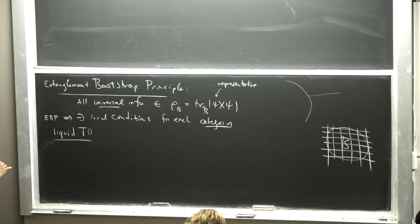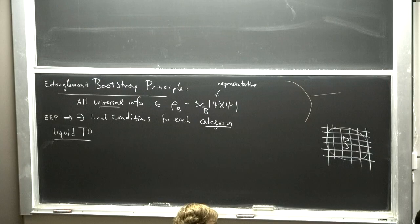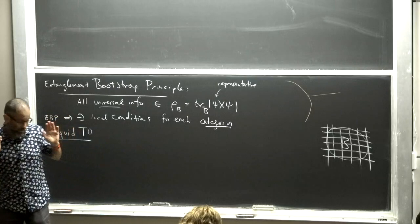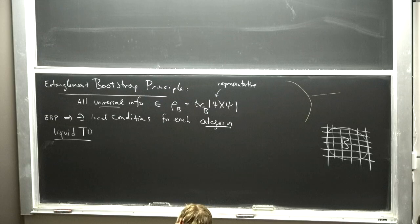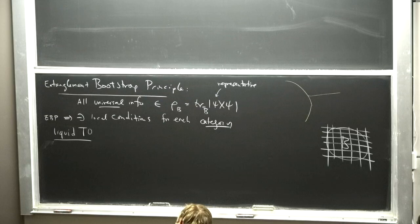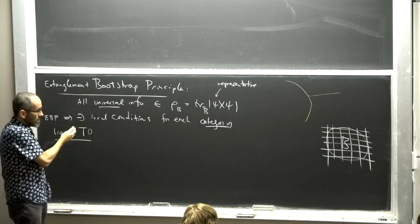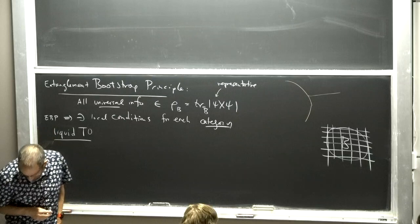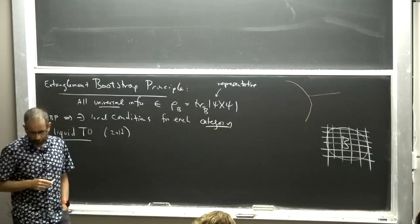At some point in the lecture we'll also get to the case of 1+1D CFT. You might wonder why this is interesting — you've already had many lectures about topological field theory. But an important thing to emphasize is that topological field theory is an empty shell waiting to be filled with the data, the universal data, that determines all the amplitudes. Meng did a wonderful job explaining what that data is in the case of 2+1D topological field theory.